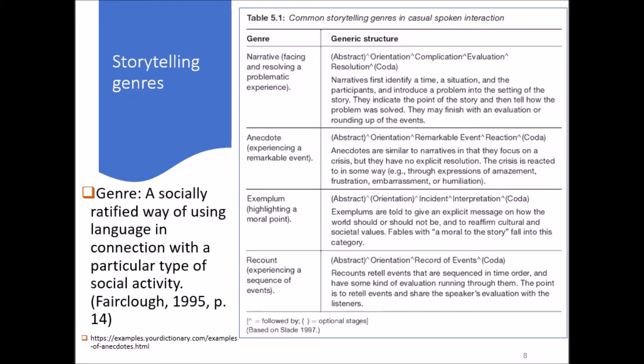After this, you introduce a problem into the setting—that's what we call a complication. Those small wedge signs here in between each of these stages indicate 'followed by.' First orientation, then followed by a complication, which is the statement of the problem. Then you indicate the point of the story, and then you tell how the problem was solved—that's the evaluation and also the resolution, if the problem was solved at all.